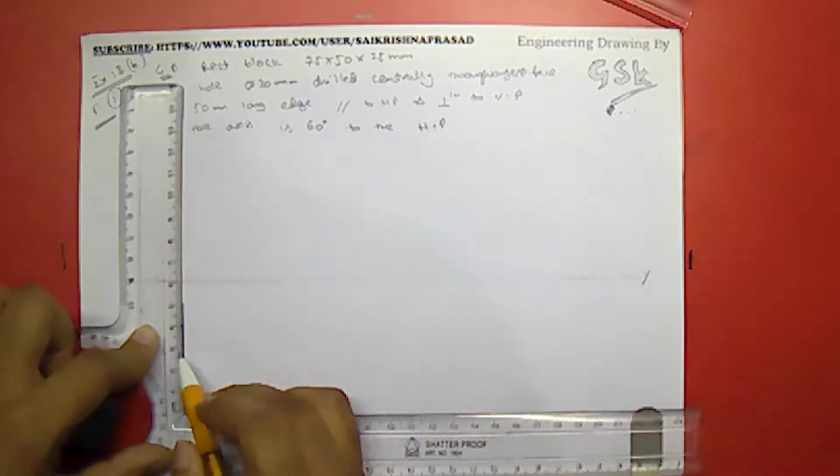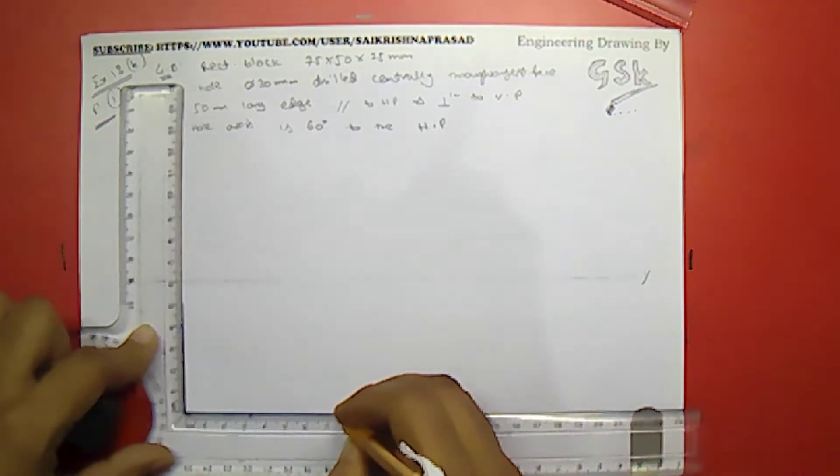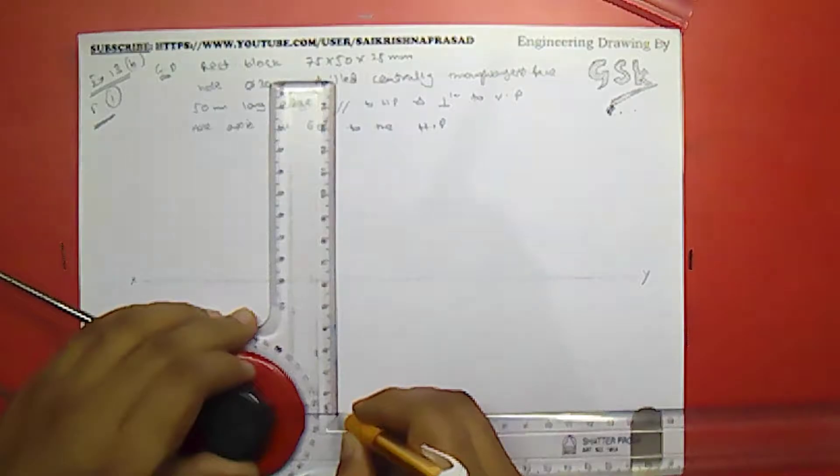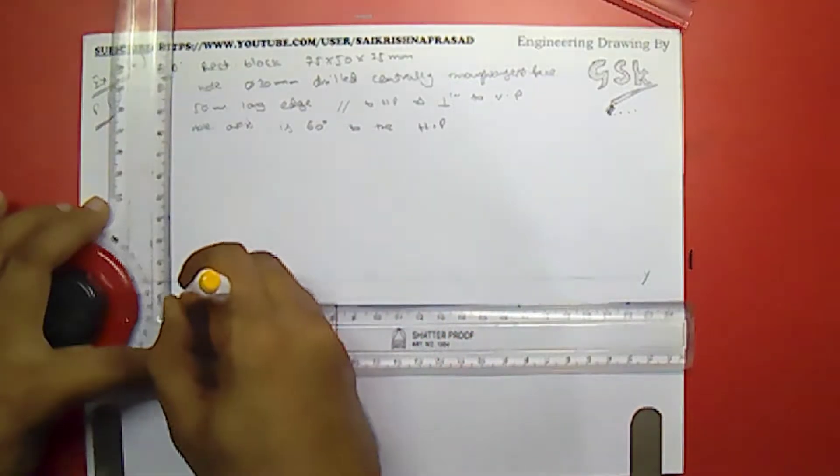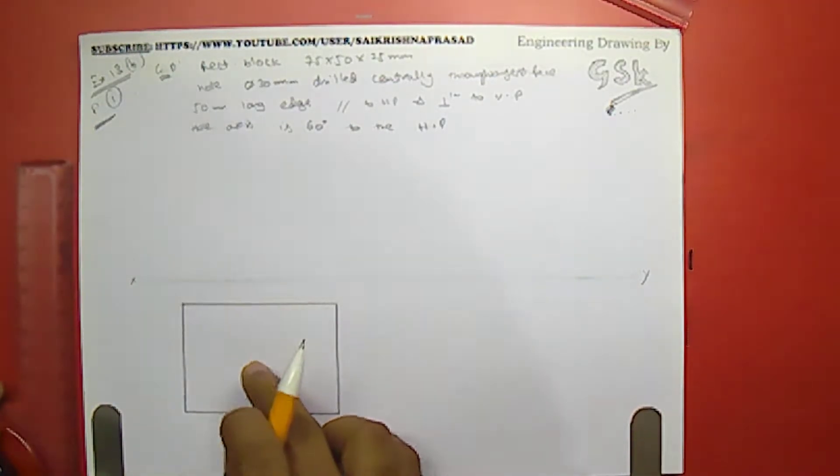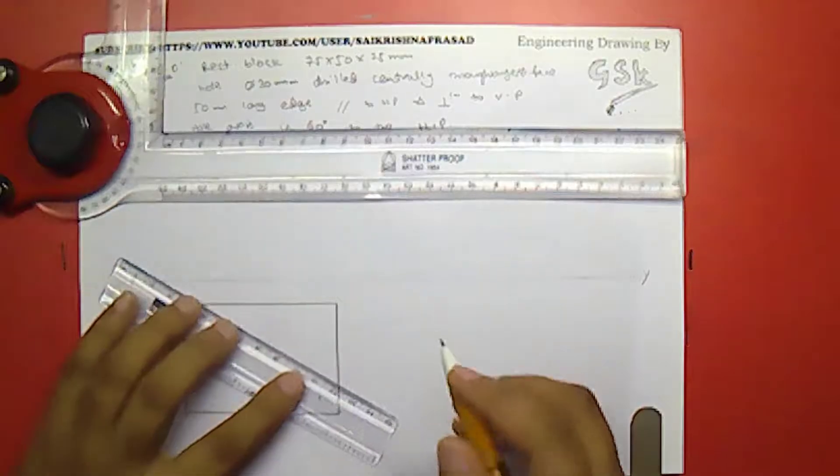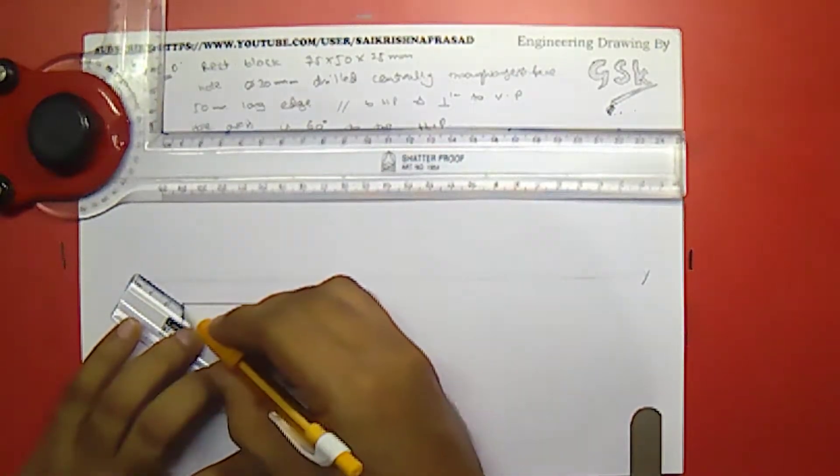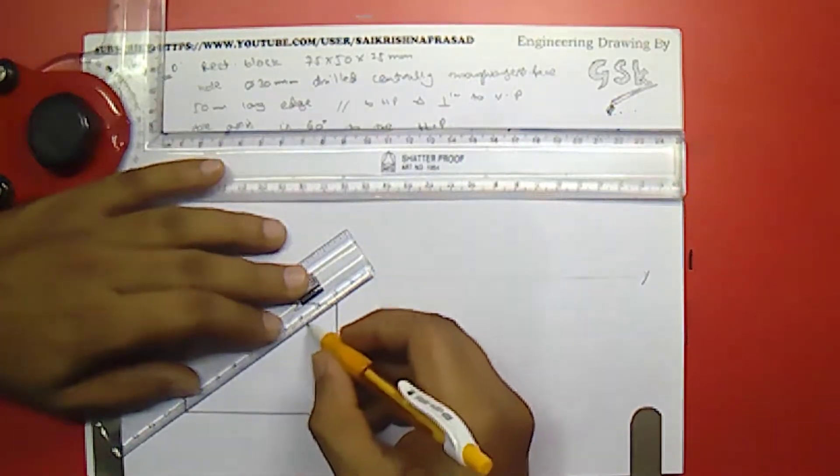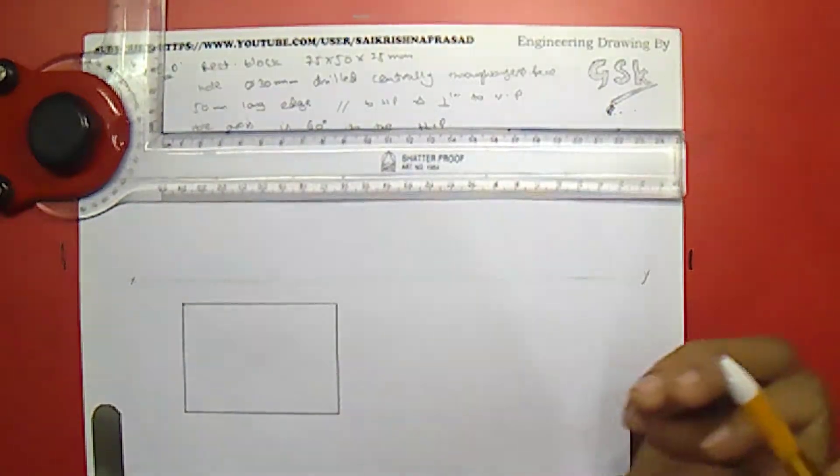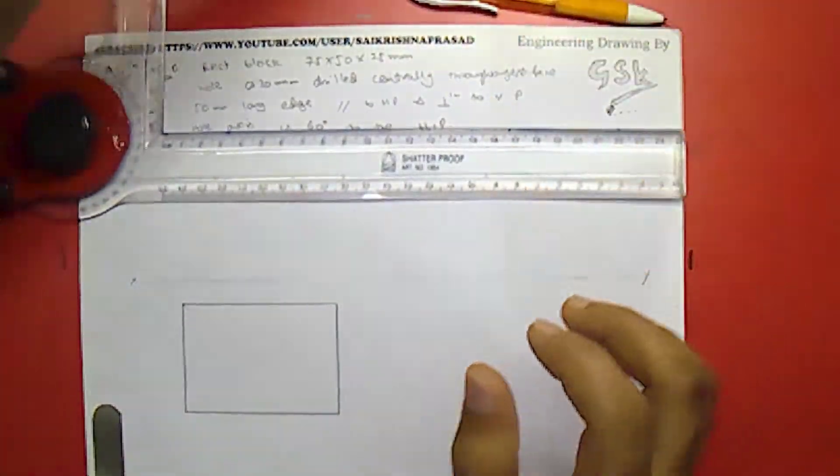And if this is 50 this would be obviously 75. And we have a hole drilled centrally on the largest face. This is the largest face over here. So I have to consider the center of this one. I will be taking a reference line to find out the center. How to find out the center of any rectangular or quadrilateral: just draw the diagonals for the opposite corners, you will be getting the center.